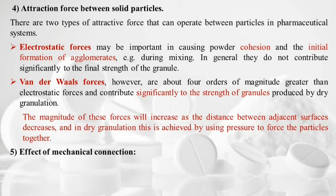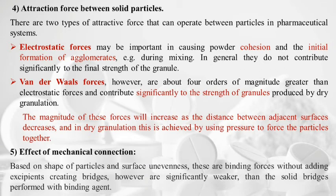Fifth mechanism: mechanical interlocking based on shape of particles and surface unevenness — particles fit with one another due to their shape and surface irregularities, creating binding forces without adding excipients or creating bridges. However, these are significantly weaker than solid bridges formed with binding agents.